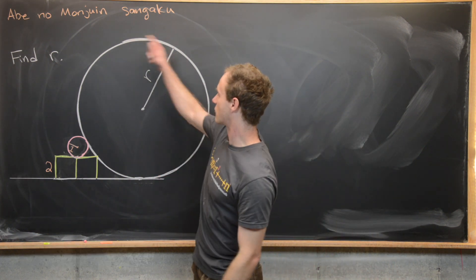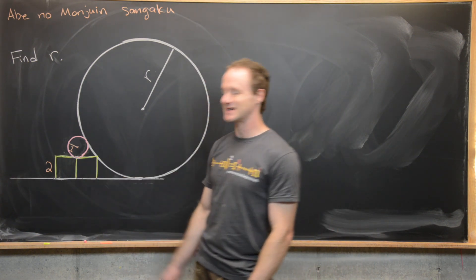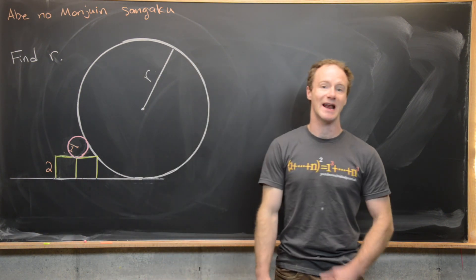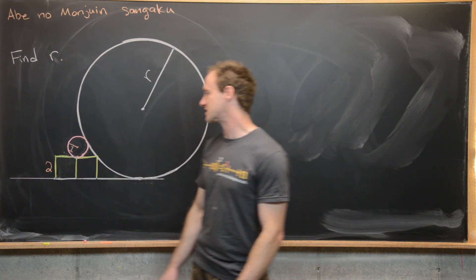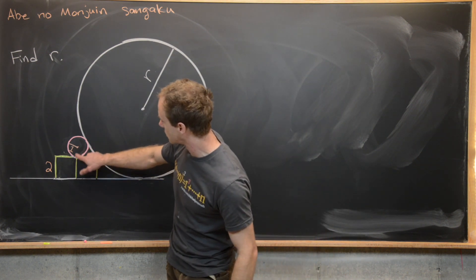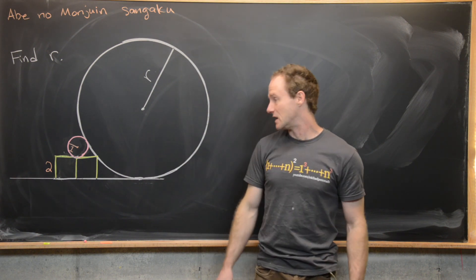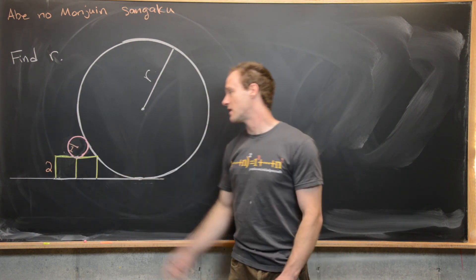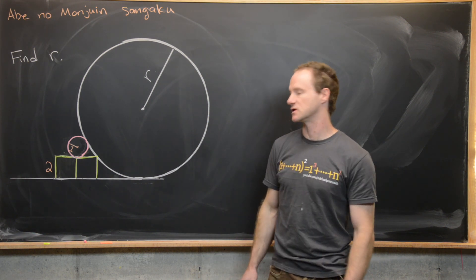We've got a circle of radius R — we don't know what that radius is just yet. Stacked to the side of this circle, we have two squares next to each other that have side length 2. On top of that, we've got a circle of radius 1, and the important thing is that the center of that circle is directly above where the two squares meet. This is all the information we have, and we want to find R given the measurements of those three geometric objects: the two squares and the one circle.